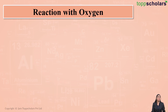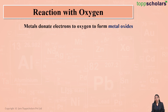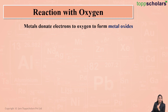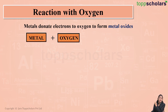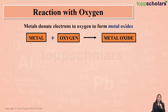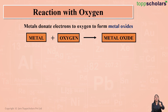Now let us discuss some chemical properties of metals. How do metals react with oxygen? Metals generally react with oxygen, wherein metals donate electrons to oxygen and form metal oxides. The general reaction is: metal + oxygen → metal oxide. For example, magnesium reacts with oxygen to give magnesium oxide, which is a metal oxide.